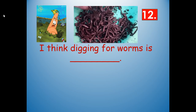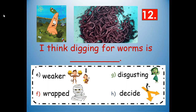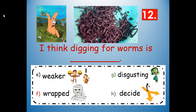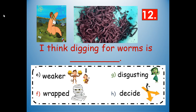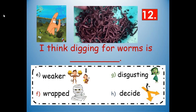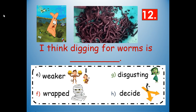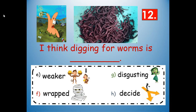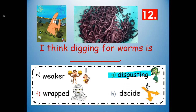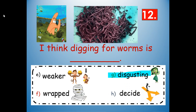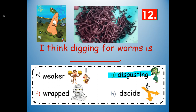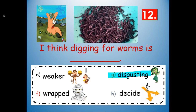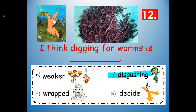Number 12: I think digging for worms is blank. Would it be weaker, wrapped, disgusting, or decide? What makes sense given the picture clues and where the word is in the sentence? Disgusting — D-I-S-G-U-S-T-I-N-G. I think digging for worms is disgusting. Other people may disagree with you — they have a different opinion.